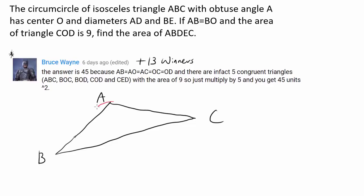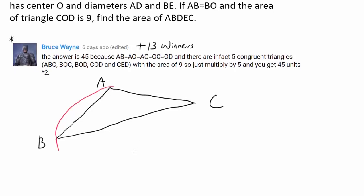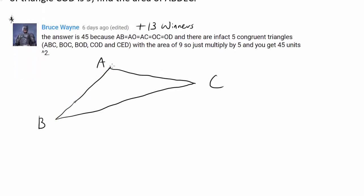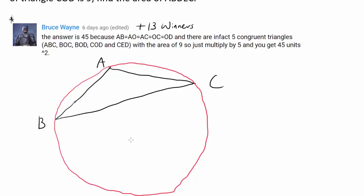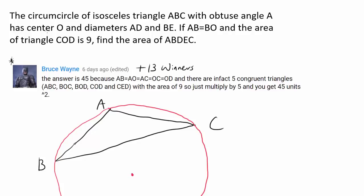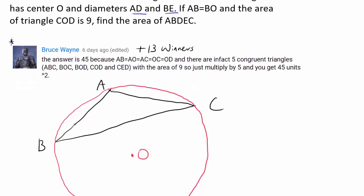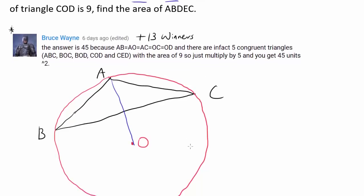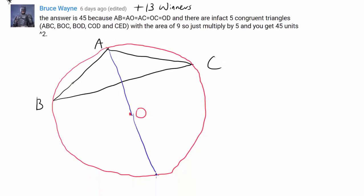Let's draw a circle — this is not the best circle, but I'll try my best. Let's curve this way and go through C, back to A. This one looks reasonable. And we know this circle has center O, and diameters AD and BE, as shown.